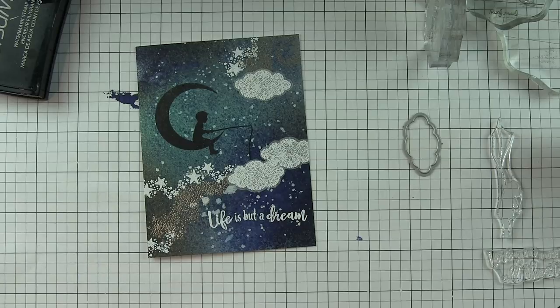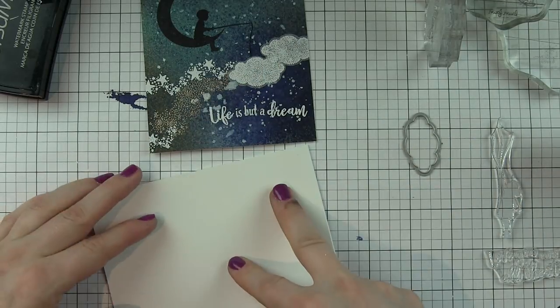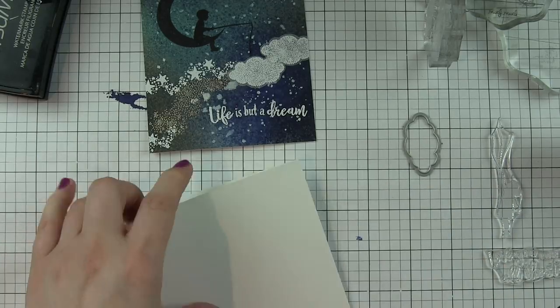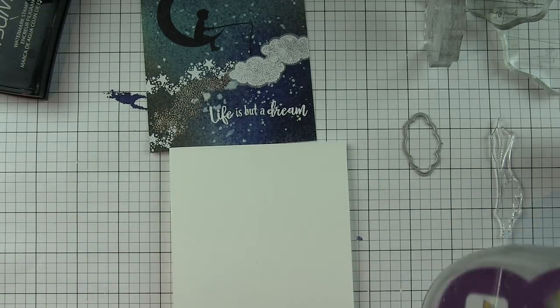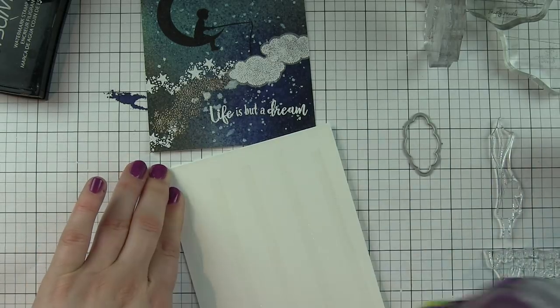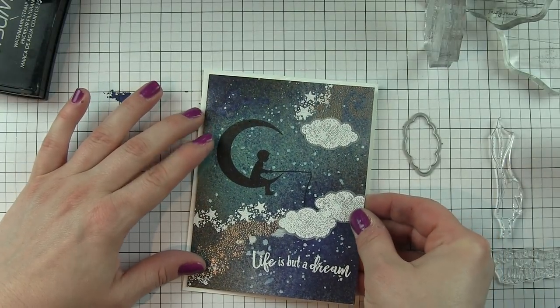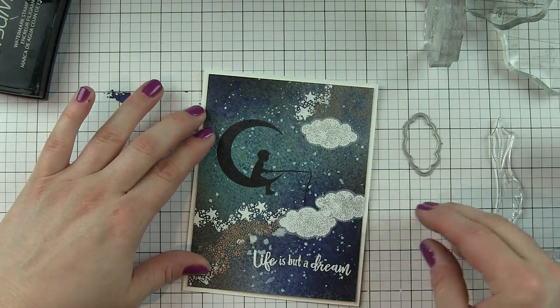I'll attach this to my white top fold card base. I always like to score it with a Teflon bone folder to make sure it has a nice crease. I'll place some adhesive on that, pop my panel in place, and that is going to finish up these night sky cards with the silhouette images.